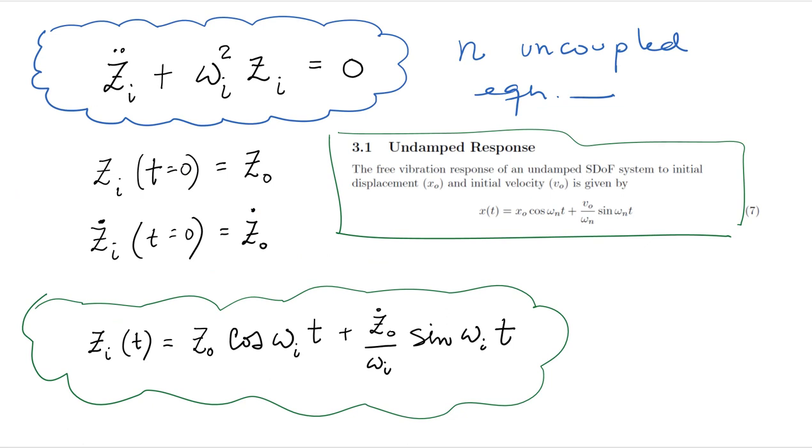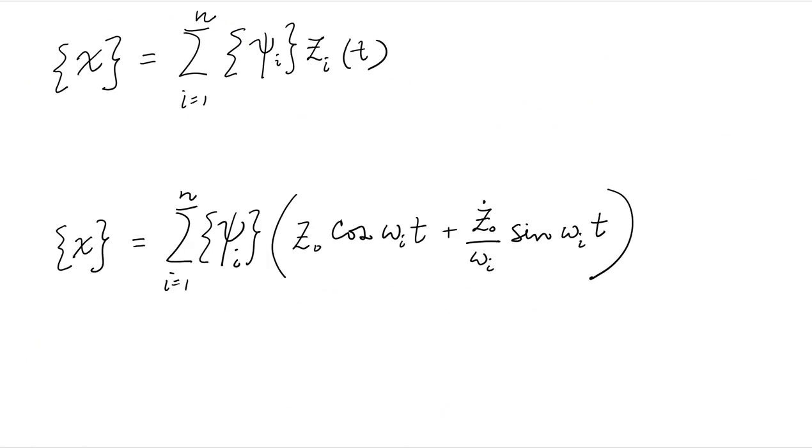So basically, we can get the solution for every modal coordinate in time. But that's really not what we are after. We want the response in the normal spatial coordinates x. So to do that, we simply bring the modal coordinates back by multiplying by phi.